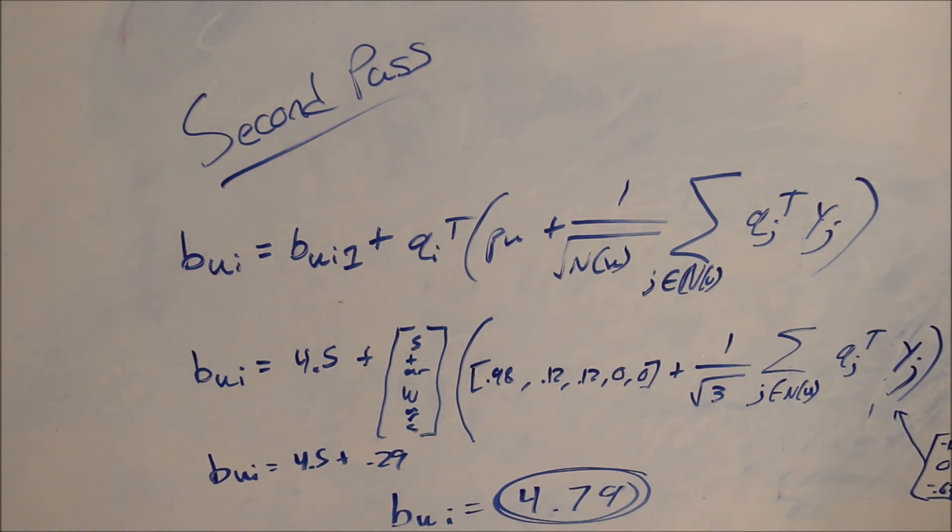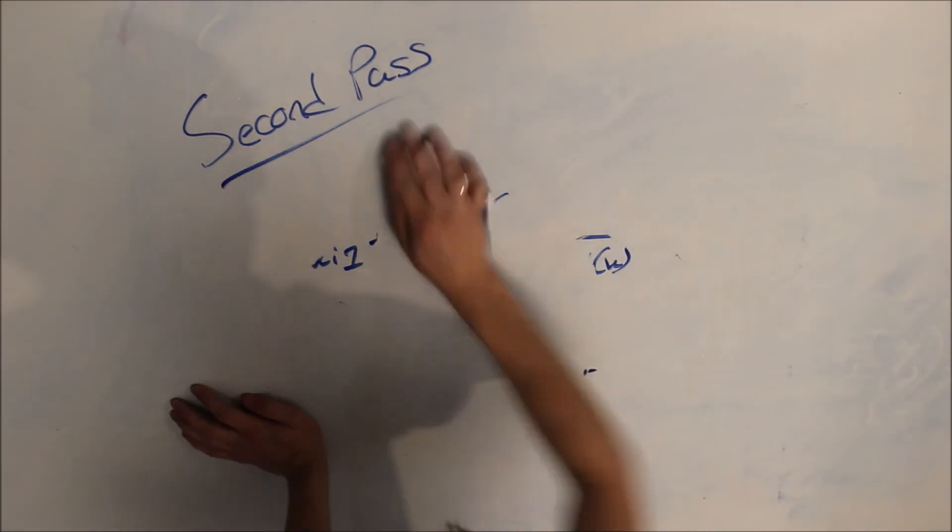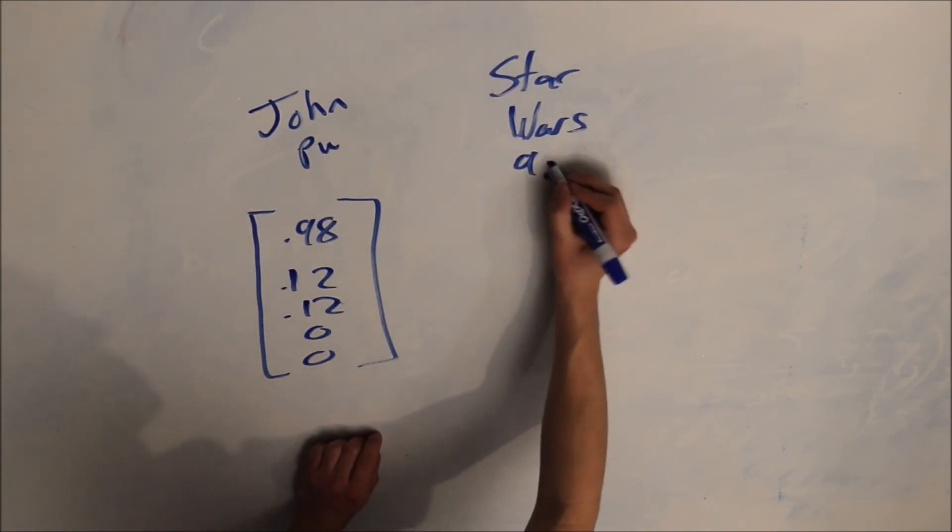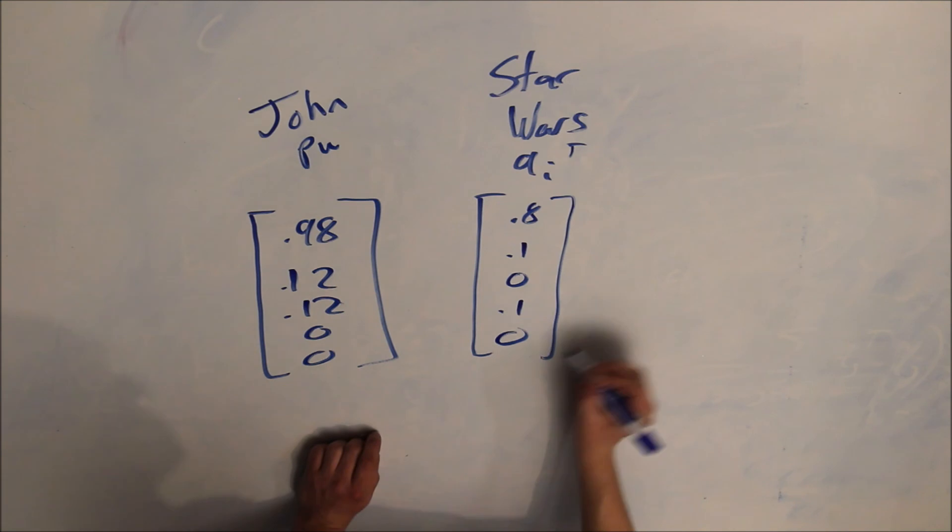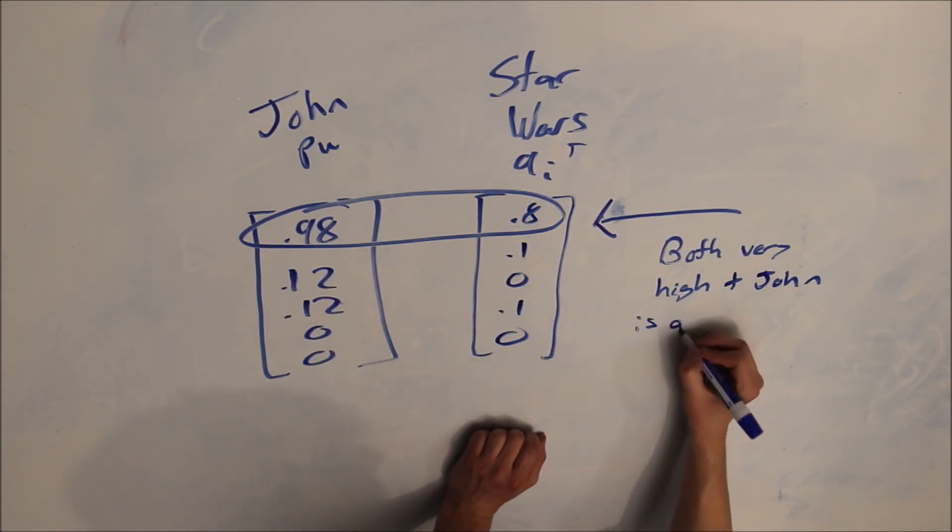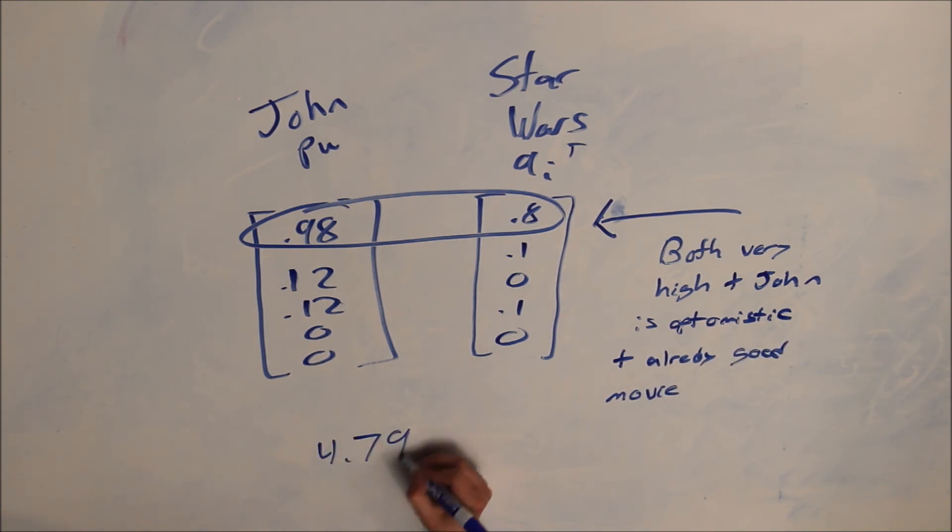We end with a much more reasonable rating of 4.79, which, when looking back at the data, makes sense. John's user profile has a 0.9 preference for action movies, and Star Wars is a pretty action-heavy movie. We also know that Star Wars was well-liked by the Netflix community, so its high score makes sense.